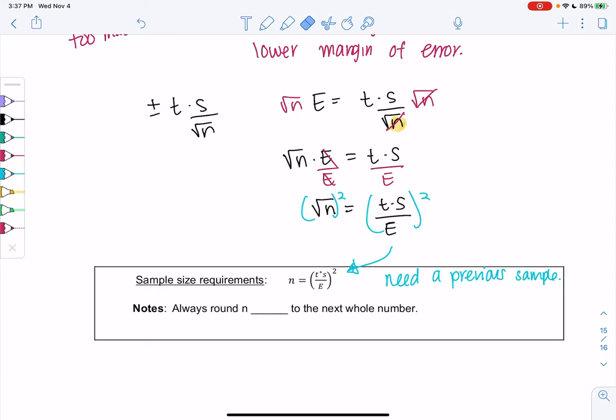So maybe you take a sample, error is good, you're fine. Or you take a sample, you have too much error, so you find a new one. And we're always going to round up to the next whole number.